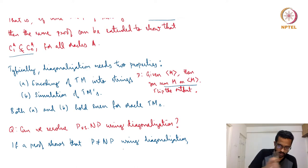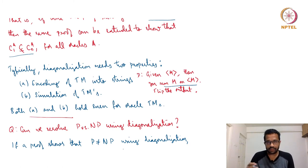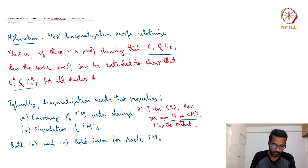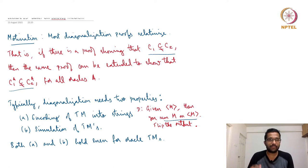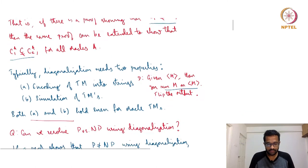Whatever you say between C1 and C2, it relativizes — it can be said for C1^A and C2^A. This is what relativization means. This holds because both encoding and simulation can be done even for Oracle Turing machines.